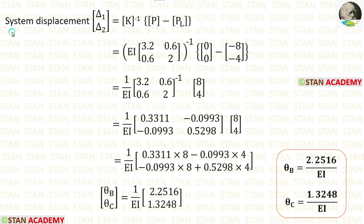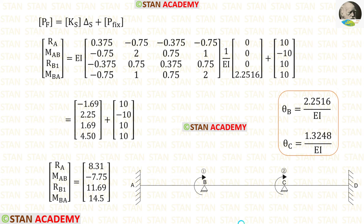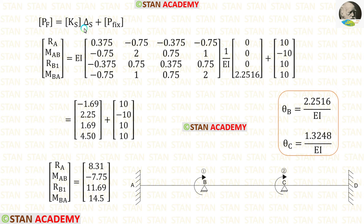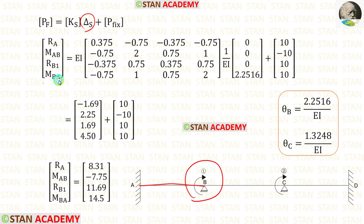We now have the system displacements — the slopes θB and θC obtained from the analysis. Now let us find the final moments and reactions. First, for span AB we apply the element stiffness matrix. In span AB, the first coordinate is at point B with moment MBA; we apply the slope value theta B as 2.2516, keeping 1 upon EI outside, and entering 0 for the other values.